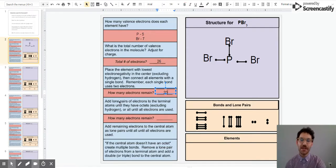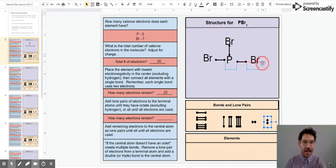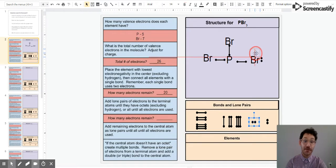I want to add lone pairs of electrons to the terminal atoms until they all have octets. I'm going to drag them around my bromines until they have an octet. This bromine already has a bond with two electrons used for bonding, so it already counts as having two electrons. So it only needs six more electrons to have an octet.